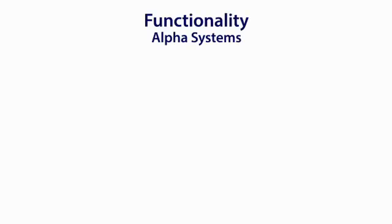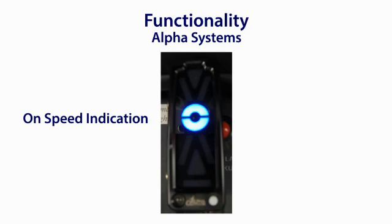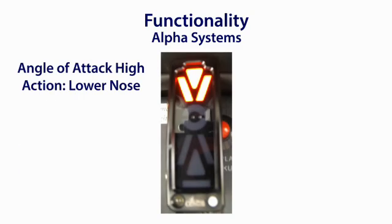The Alpha Systems device features an on-speed donut and two carets indicating what action must be taken to adjust the angle of attack. It can be calibrated from within the cockpit and gives a verbal warning when the aircraft is approaching the stall. This warning is usually in advance of the installed stall system, which gives the pilot advanced warning for stall avoidance. The device has multiple audio warning sounds which can be selected by the pilot.